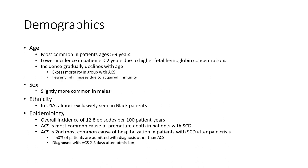It is more inclusive in Black patients in the U.S. Epidemiology: overall incidence of 12.8 episodes per 100 patient-years. Acute chest syndrome is the most common cause of premature death in patients with sickle cell disease. It is the second most common cause for hospitalization after pain crises.